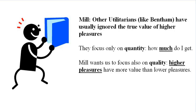Bentham, as we know, explicitly stated that the quantity of pleasure is all that matters — how much pleasure we get and how much pain we avoid. Mill wants to advocate for a utilitarianism that encourages us to maximize not just the quantity of our pleasures, but also the quality of our pleasures. Some pleasures have more value, dignity, and worth than others.